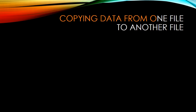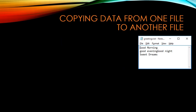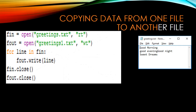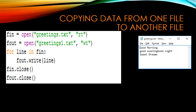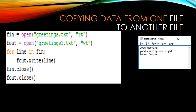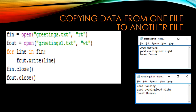Next, copying data from one file to another. The greetings.txt file content will be copied and pasted into greetings_one.txt. We open greetings.txt in read mode and greetings_one.txt in write mode. We simply read line by line and write each line into the other file using f_out.write(). The same content is now copied into greetings_one.